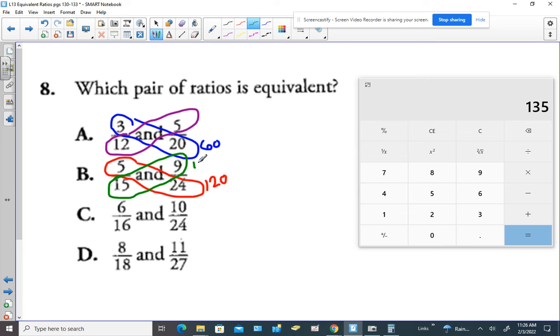So that's an example of something you're not going to pick because the cross products don't match. This number is not the same as that number.